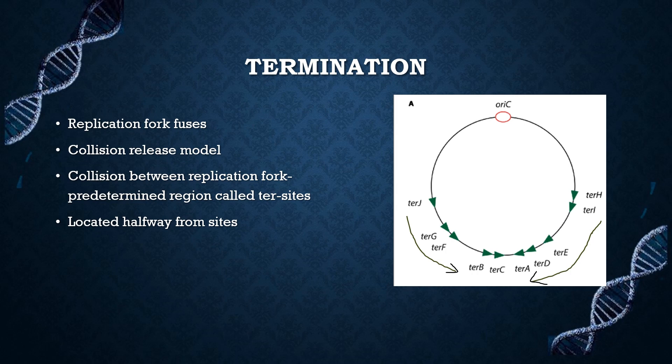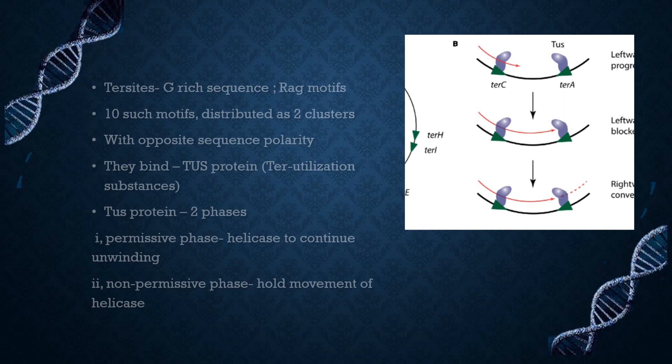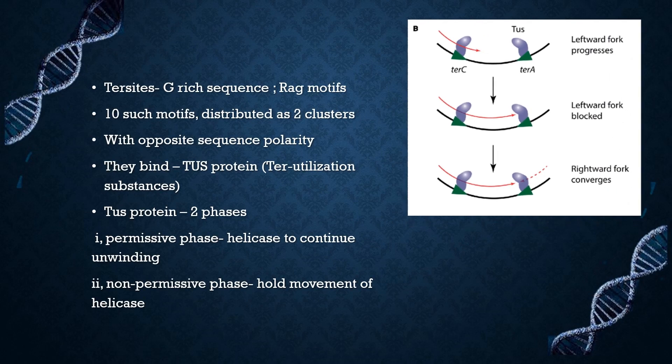Ter sites have polarity — they arrest the replication fork. These ter sites are located in two clusters of five, each cluster having a polarity opposite to the other. They are a G-rich sequence containing the Tus protein motifs. There are 10 such motifs distributed as two clusters around the terminator region, and these clusters have opposite sequence polarity.